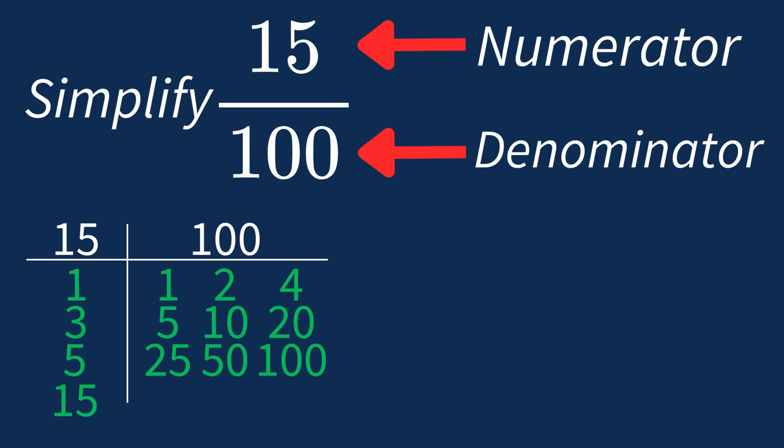So the largest common factor between 15 and 100 is 5. This means we can divide both the numerator and denominator by 5 to simplify the fraction. Dividing the numerator 15 by 5 gives us 3. Dividing the denominator 100 by 5 gives us 20.